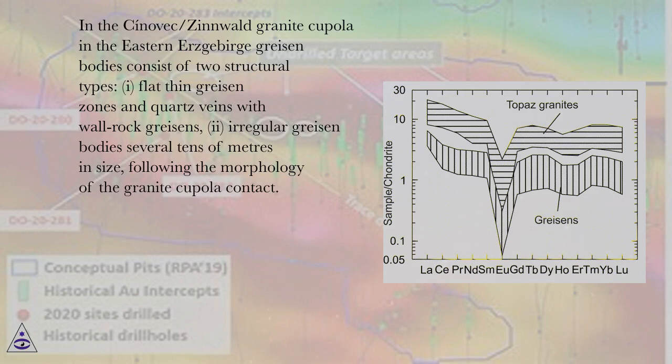In the Cinovec/Zinnwald granite cupola in the eastern Erzgebirge, greisen bodies consist of two structural types: flat thin greisen zones and quartz veins with wall rock greisens; and irregular greisen bodies several tens of meters in size, following the morphology of the granite cupola contact.